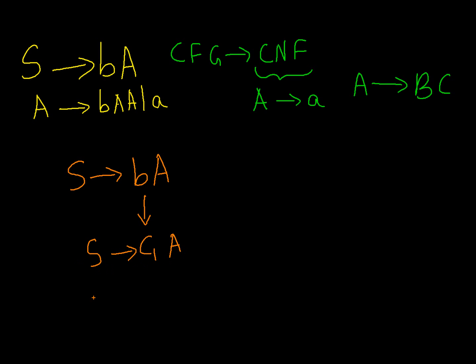Now this is in Chomsky normal form where C1 produces symbol b. Now I converted this one step into two steps, and these two steps are of this form: one symbol produces two symbols, or one symbol produces a terminal.